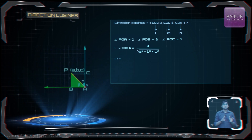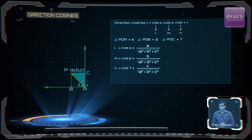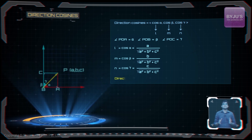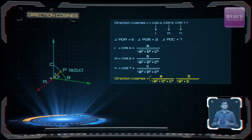Similarly, M = cos beta = B divided by the square root of A² + B² + C², and N = cos gamma = C divided by the square root of A² + B² + C². So the direction cosines of a position vector to the point P with coordinates (A, B, C) are: A/√(A²+B²+C²), B/√(A²+B²+C²), and C/√(A²+B²+C²).